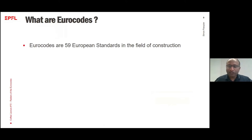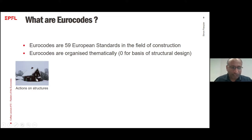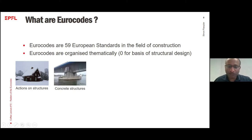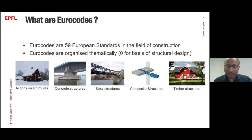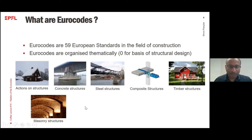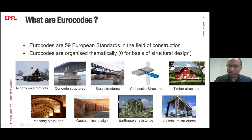Eurocodes are 59 European standards in the field of construction. Eurocodes are organized thematically — there are in fact 10 families. Eurocode 1 is actions on structures. Eurocode 2 is concrete structures. Eurocode 3 is steel structures. Eurocode 4 is composite structures, a mix of steel and concrete. Eurocode 5 is timber structures. Eurocode 6 is masonry structures. Eurocode 7 is geotechnical design. Eurocode 8 is earthquake resistance. Eurocode 9 is aluminium structures. The tenth one is called Eurocode 0, which is the basis of structural design.